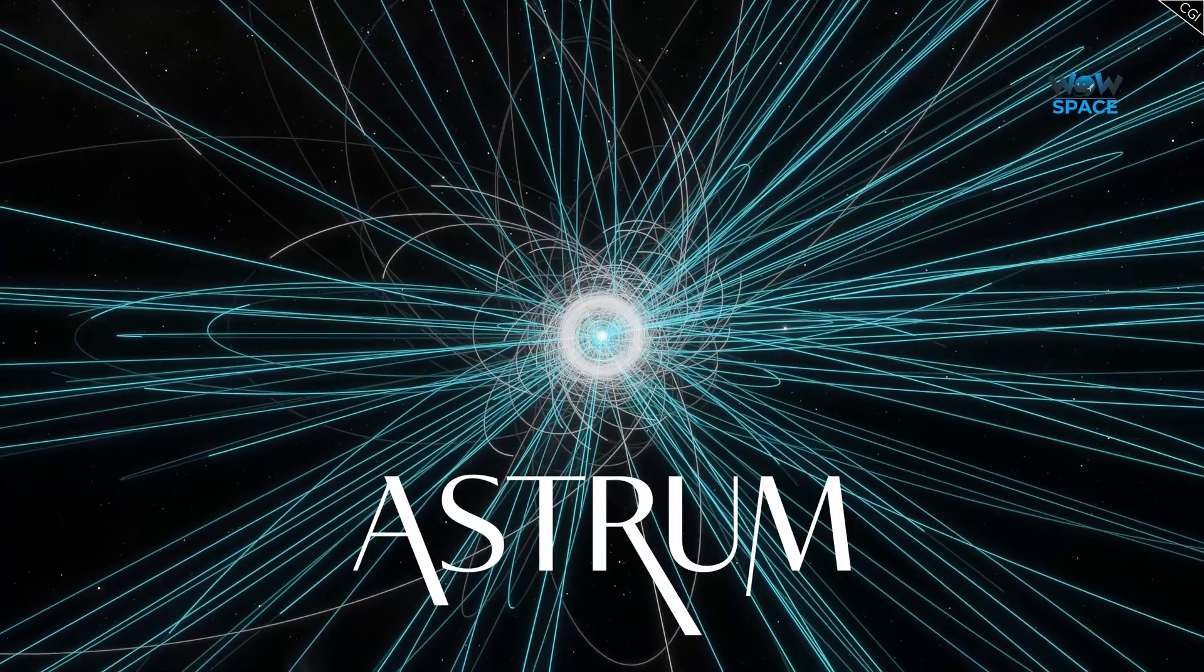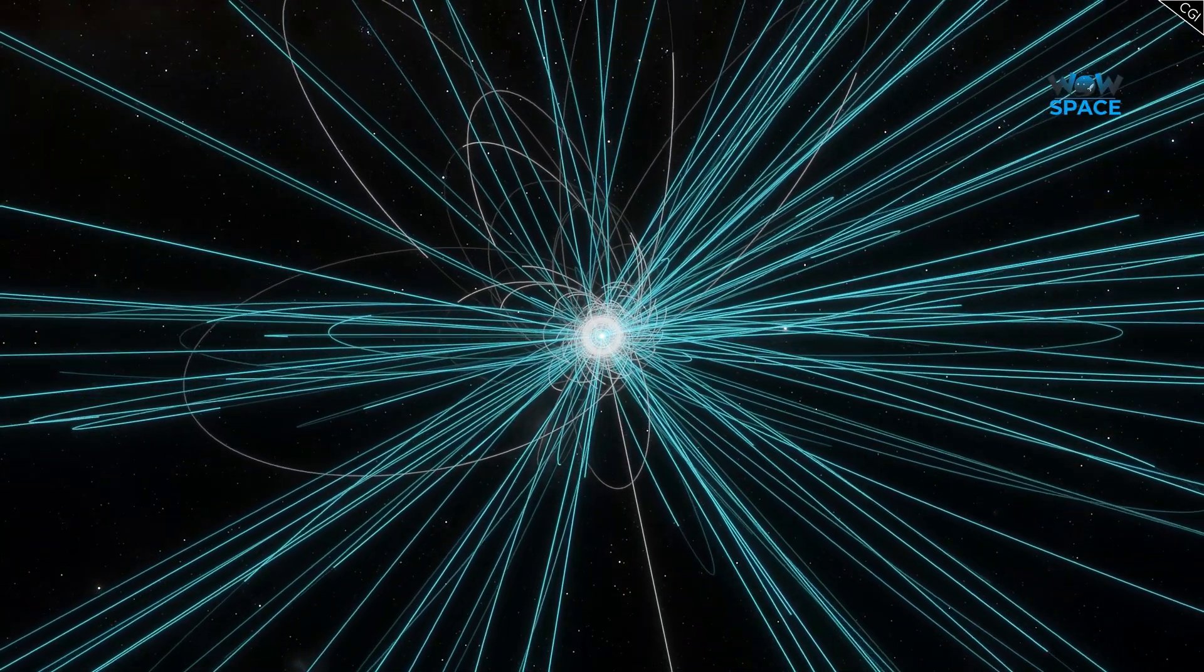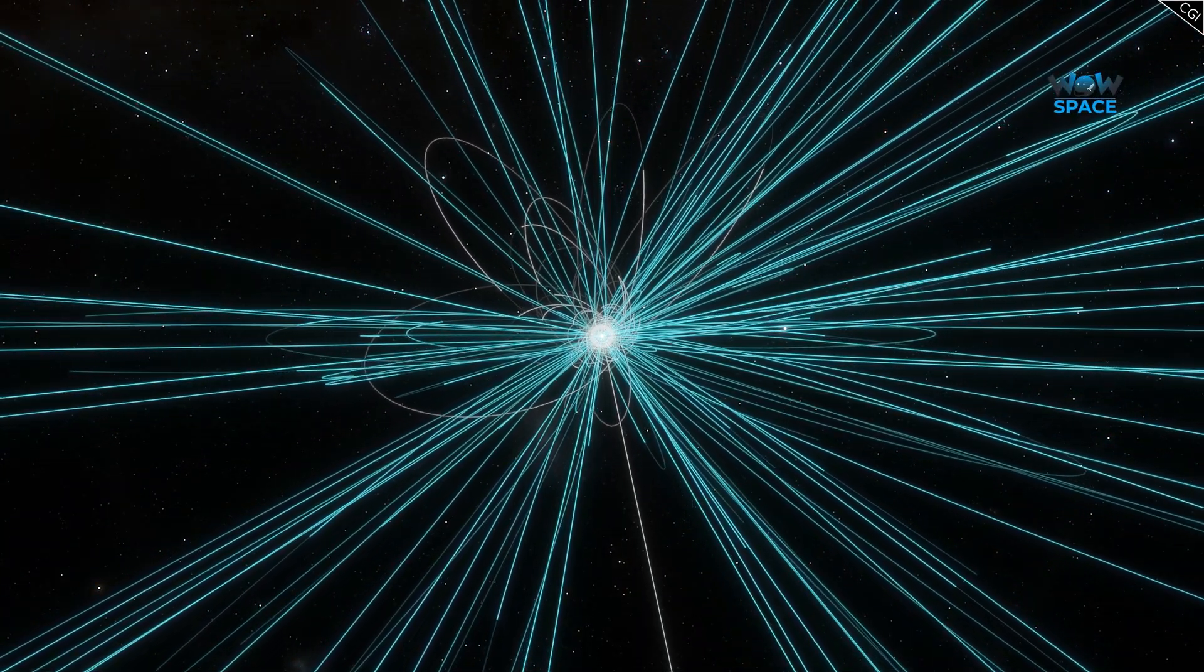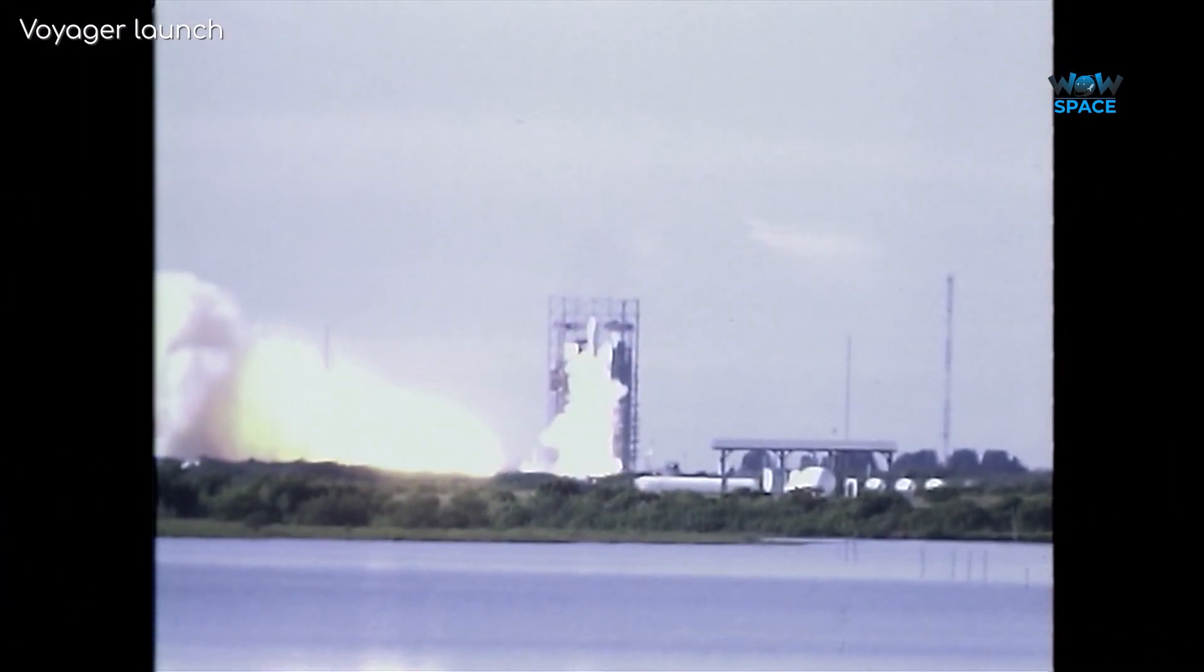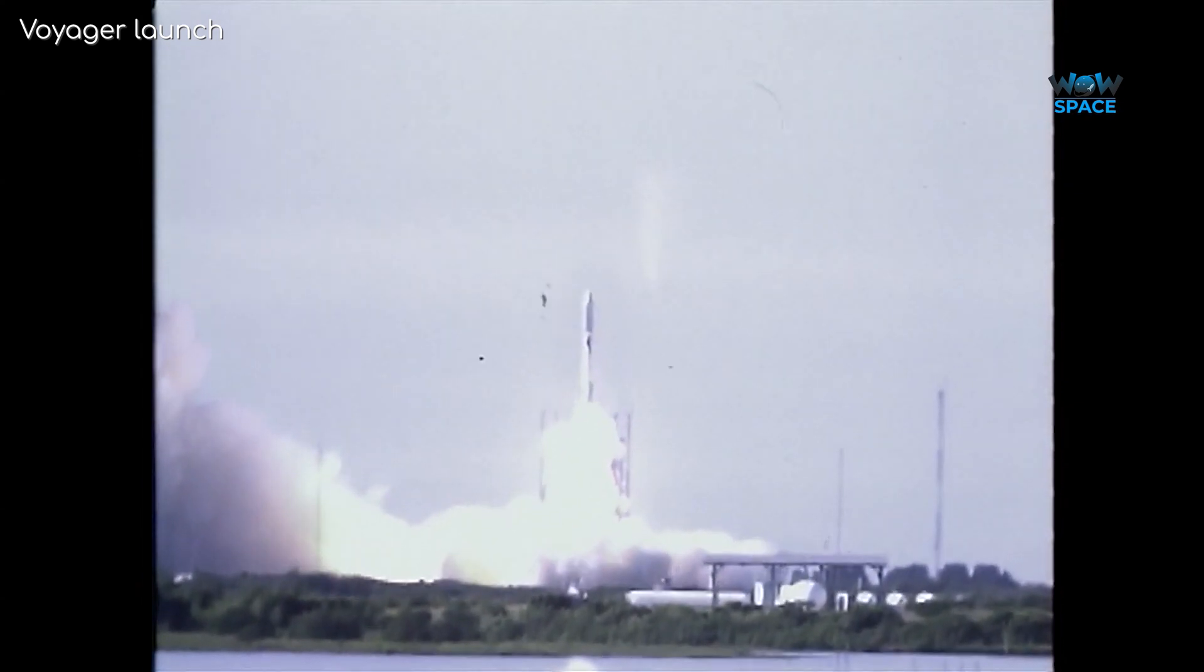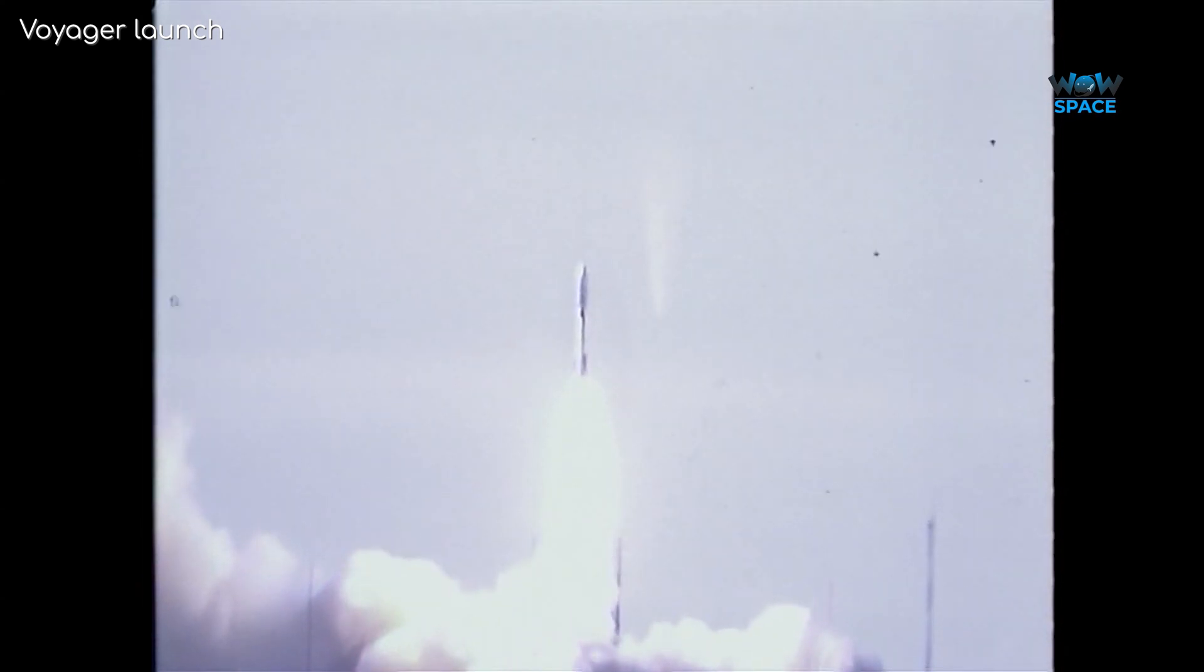Let's look first of all at where the Voyagers are, and why some say they have left the solar system. Astonishingly, the Voyagers, which launched in 1977, are still operational today, although at reduced capacities.